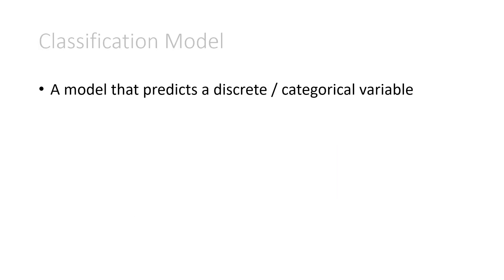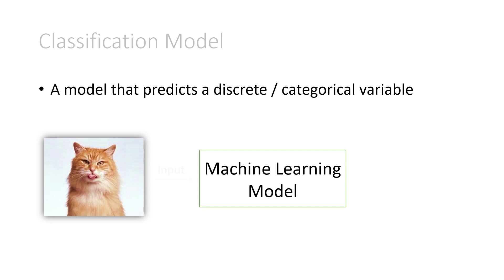Now an example of a classification model. Again, it's a model that predicts a discrete or categorical variable. It doesn't matter whether it's ordinal or nominal. So here we have another machine learning model. And this takes as input the image of this cat. And it's trying to figure out what is actually represented in this image.